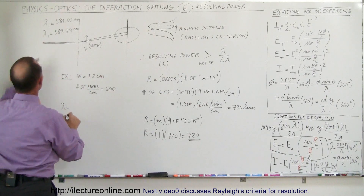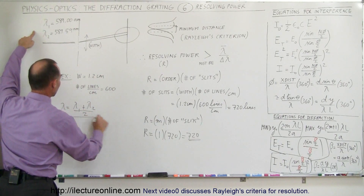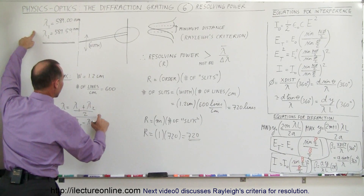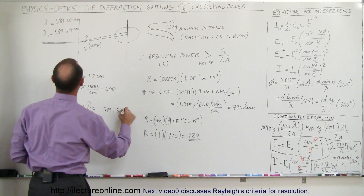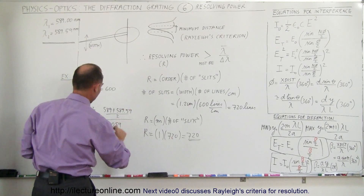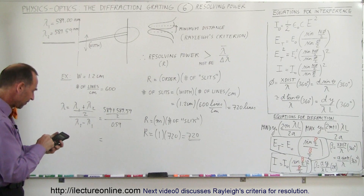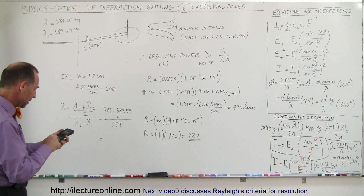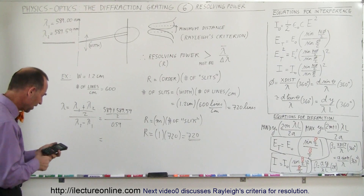The average value of the wavelength is (λ₁ + λ₂) / 2, divided by the difference λ₂ − λ₁. So this equals (589 + 589.59) / 2, divided by the difference of 0.59. Taking 589 plus 589.59 and dividing by 2 gives the average value, and dividing by 0.59 gives us the result.